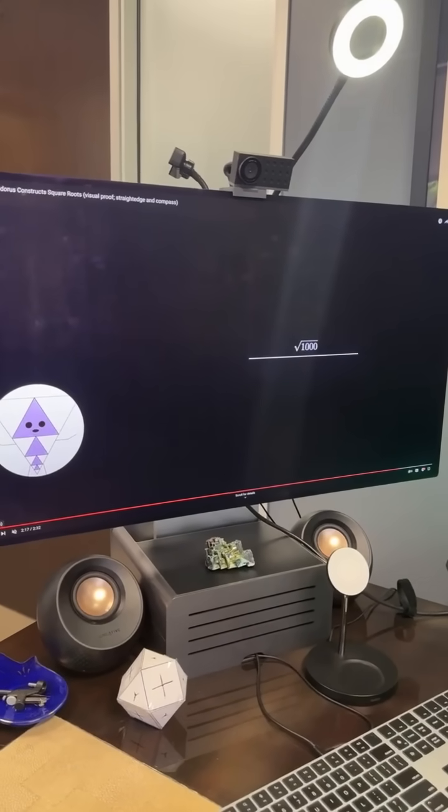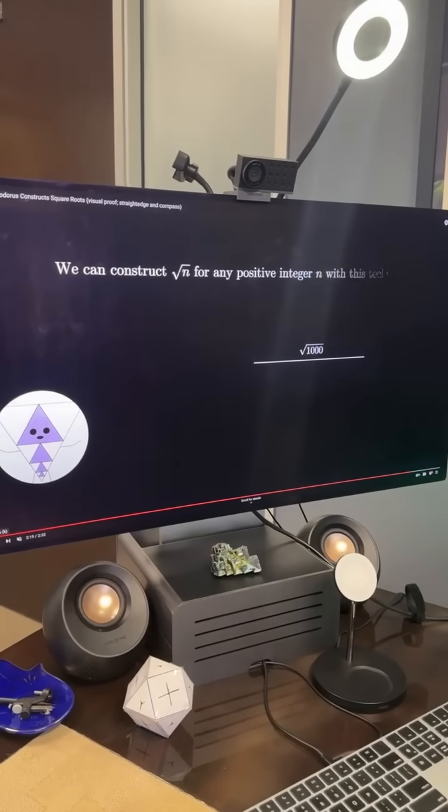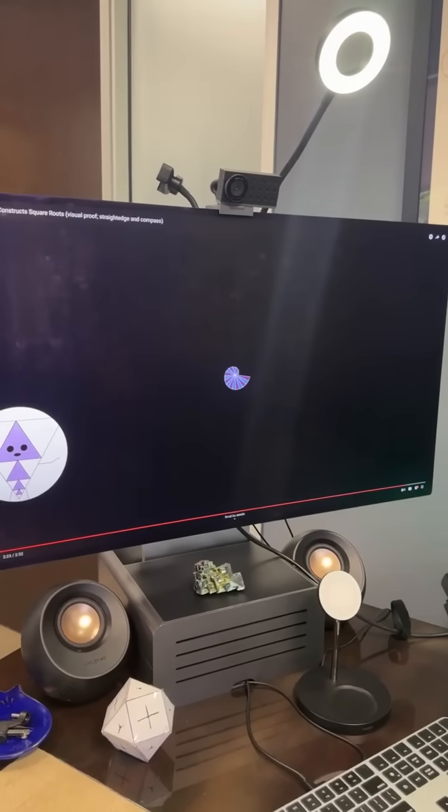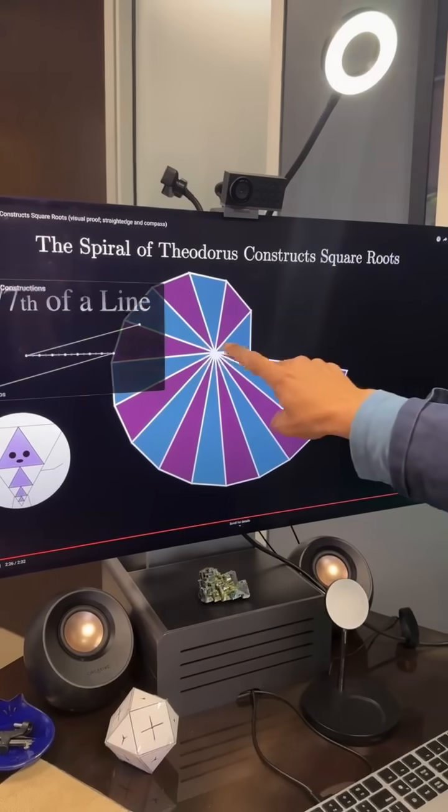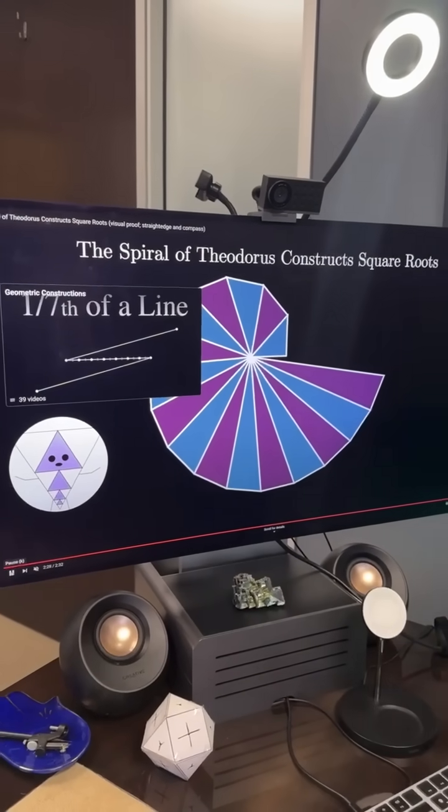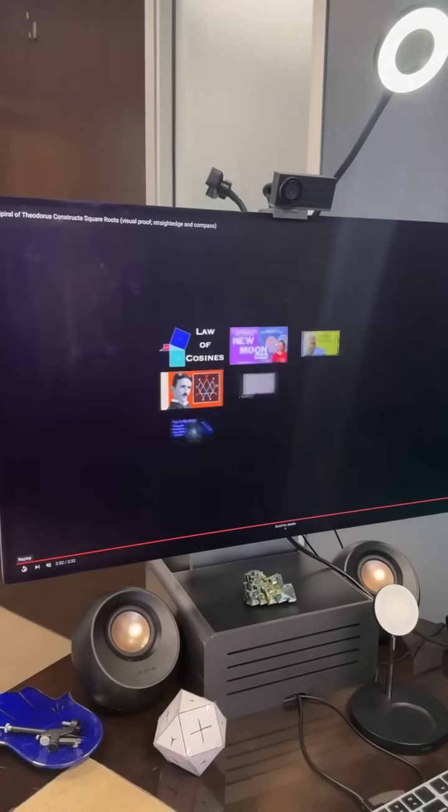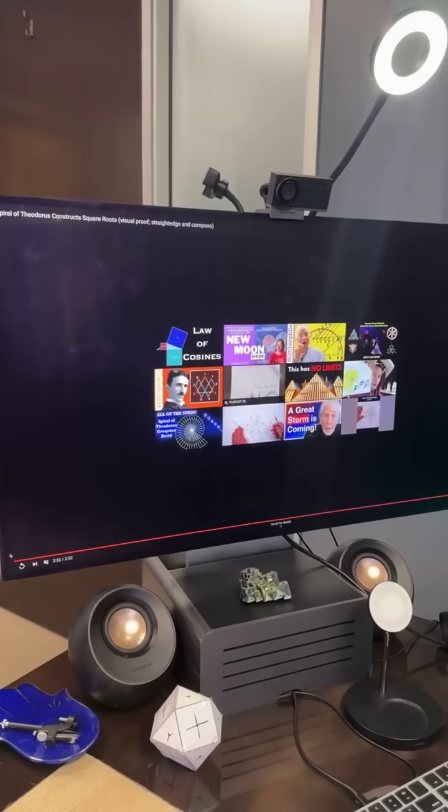So this becomes the proof that the structure of the spiral of Theodorus is giving us exactly the value of the square root of 2 as being 1.4142. It's a geometric proof, and the pattern is very evident and obvious.